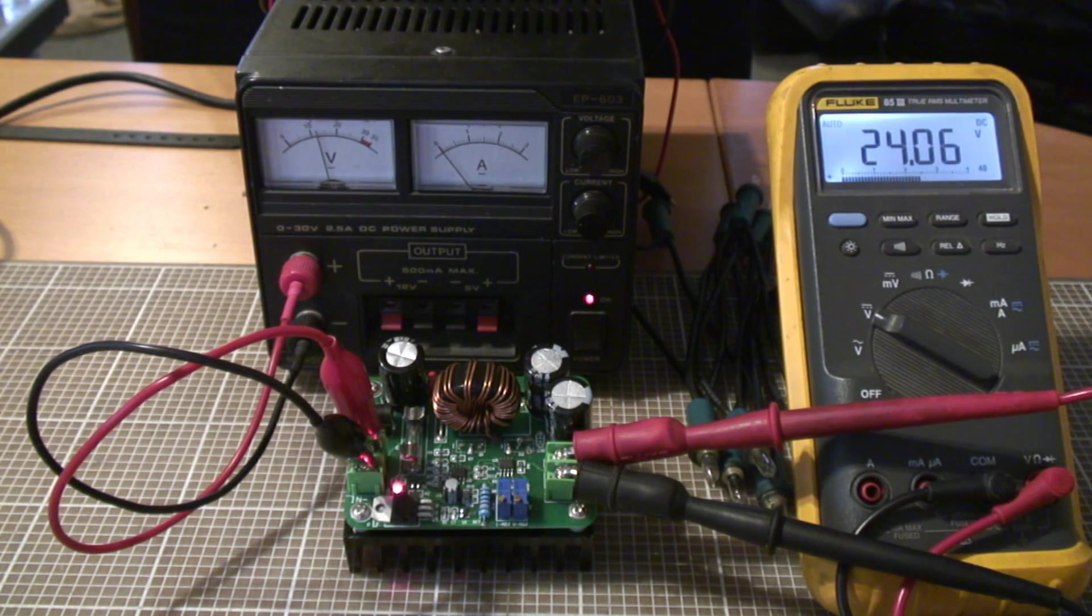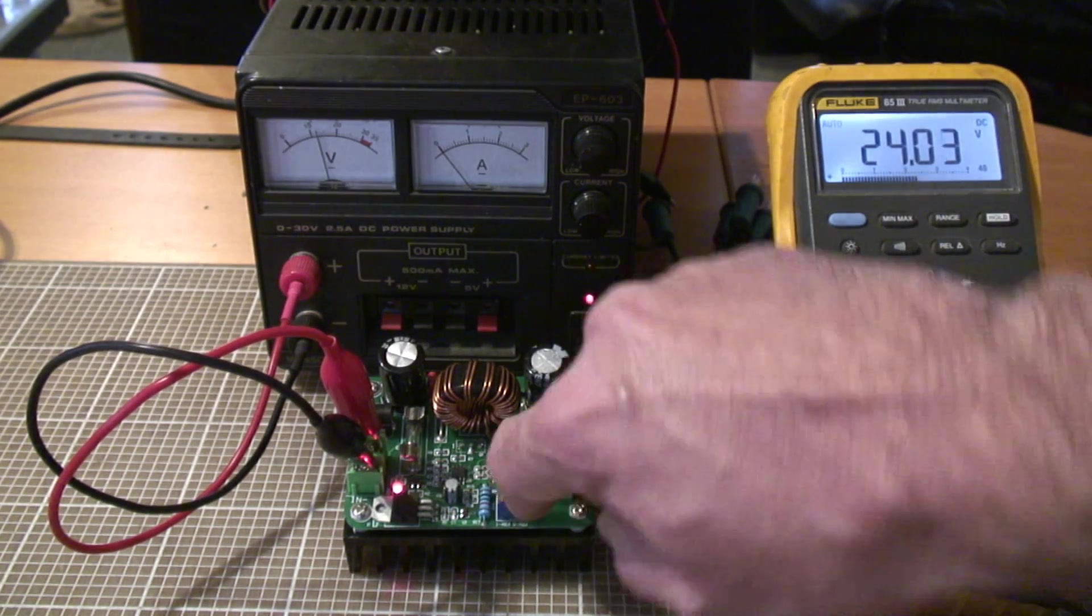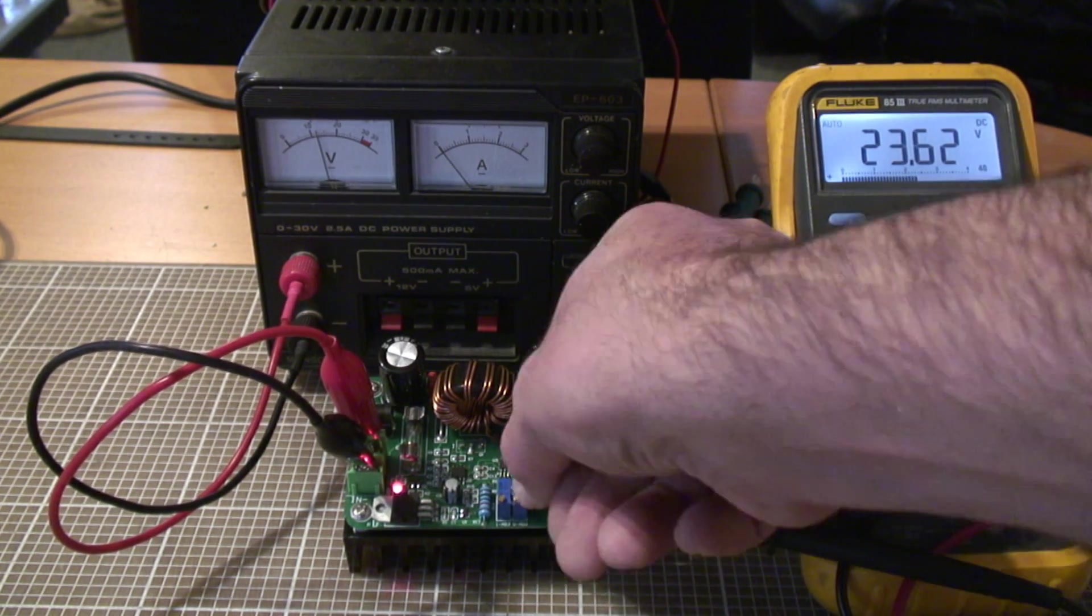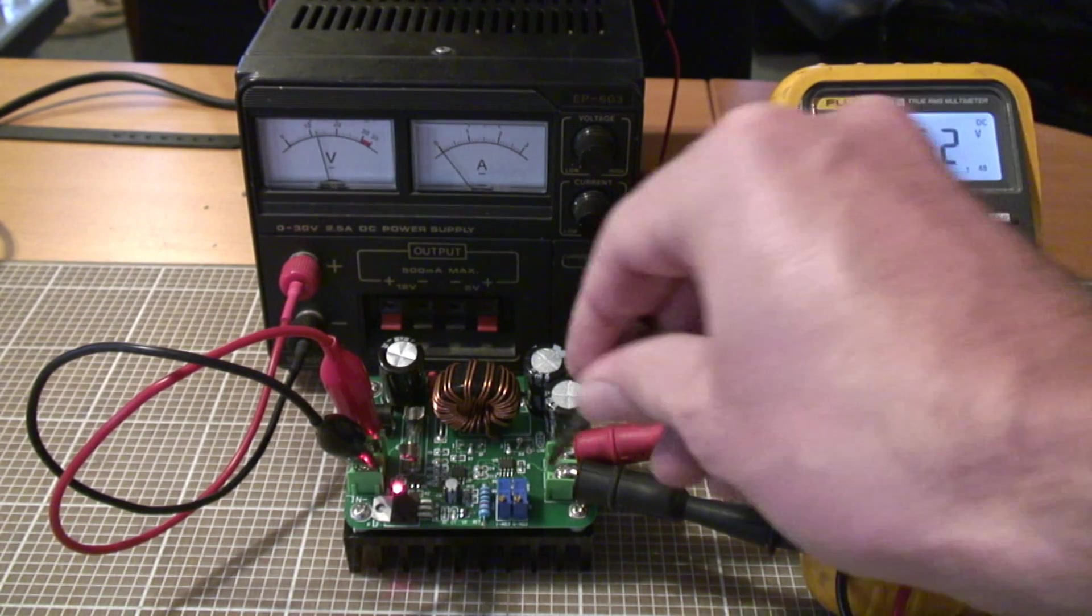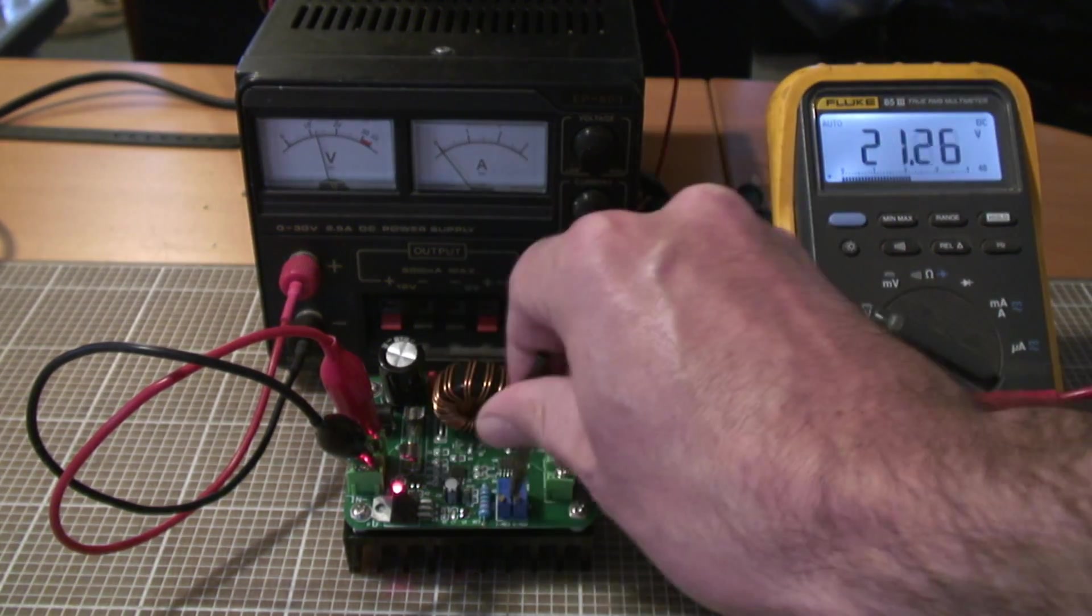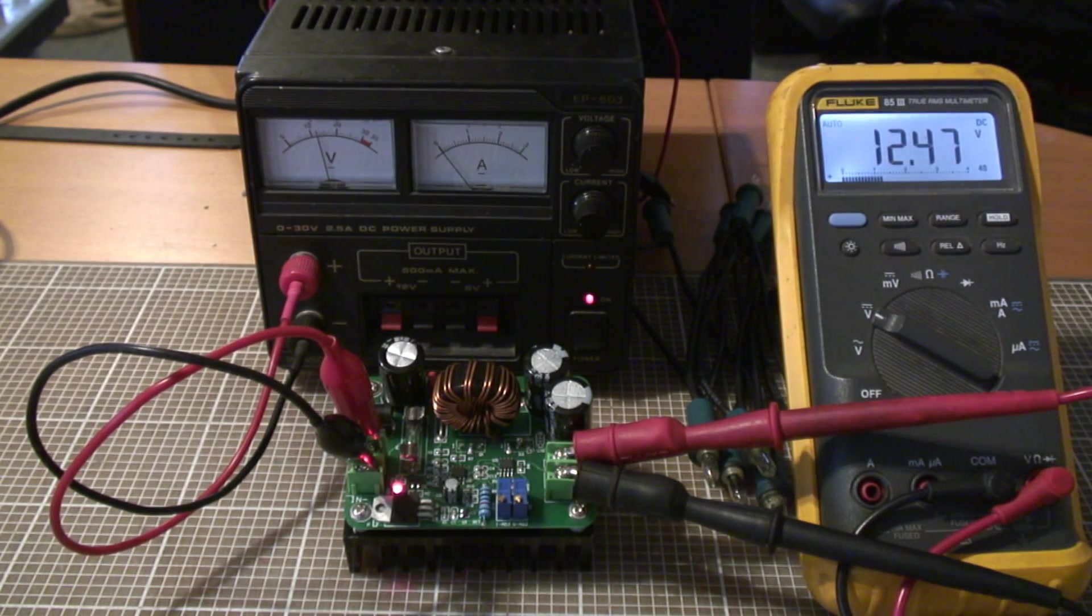Right, we'll do the next test that we did on the last one. I'm going to crank down the output voltage to something lower. We can get the output voltage down equal to the input pretty much. There we go, that'll be the input voltage. 12.47 volts on the input there.